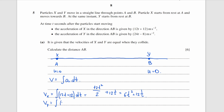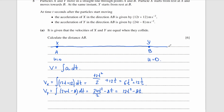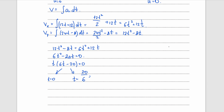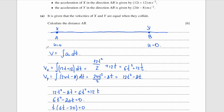Now let's find the velocity of y by integrating 24t minus 8 dt, which gives 24t squared over 2 minus 8t, so 12t squared minus 8t. Again no need for c since initial velocity is zero. When the particles collide their velocities are equal, so equating both and solving for t: 6t squared minus 20t equals zero. Factorising gives either t equals 0 or t equals 20 over 6, which is 10 over 3. We use 10 over 3 since t equals 0 means they're not colliding.